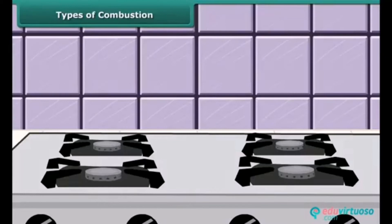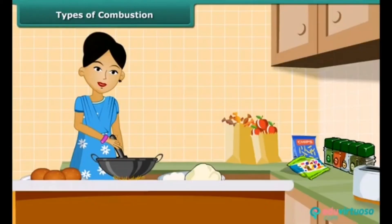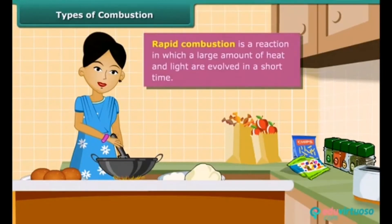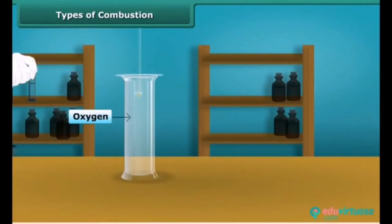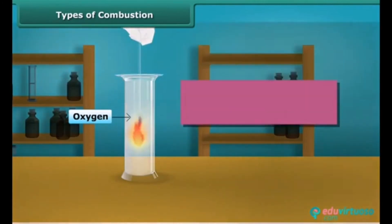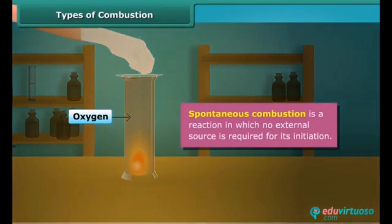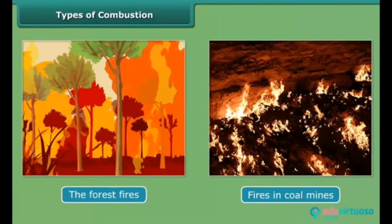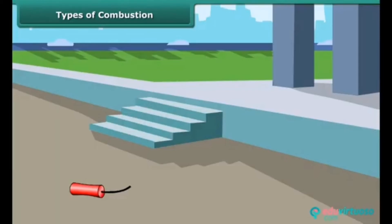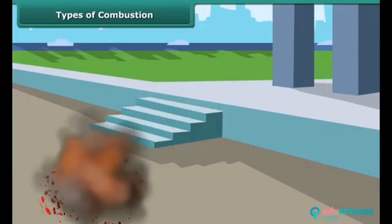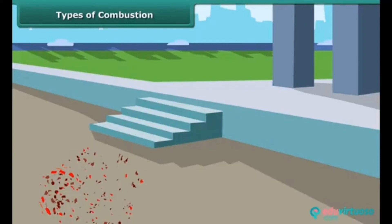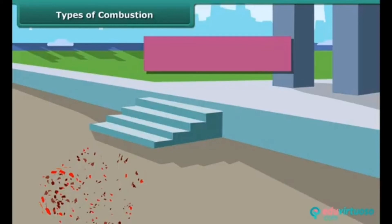Let us now look at types of combustion. LPG burns quickly producing a lot of heat — this type is called rapid combustion. When white phosphorus is left in the open for some time, it catches fire; this is called spontaneous combustion. Other examples of spontaneous combustion are forest fires and fires in coal mines. When a cracker burns, it produces a large amount of heat, light, and sound — this type of combustion is called explosion.